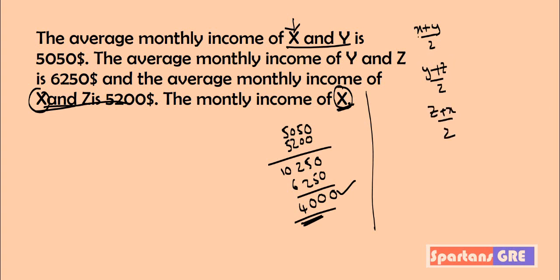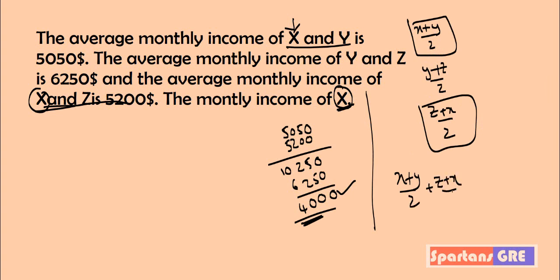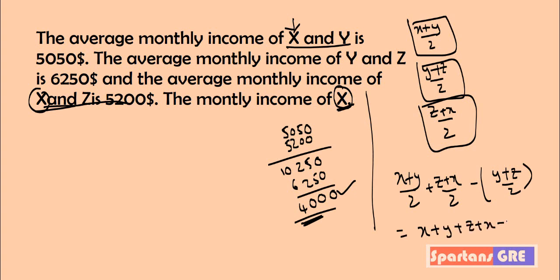Now add two of these and subtract one. If you compute (X + Y)/2 plus (Z + X)/2 minus (Y + Z)/2, you get X + Y + Z + X − Y − Z all over 2. The Y and Z terms cancel, and you are finally left with 2X/2, which is simply X. So this is exactly what the question asked.